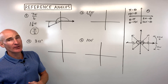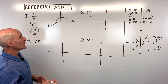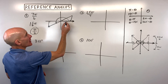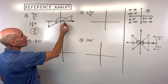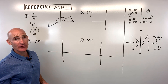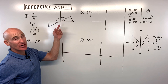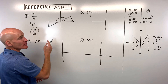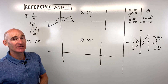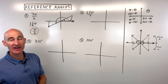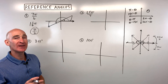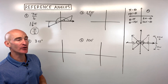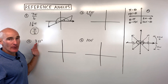You might be asking why they call it a reference angle. You can think of this as referring back to an angle in the first quadrant with a central angle of pi over 6. These two triangles are congruent, which means the side lengths are the same. So we can use it to help find the values of trig functions of common angles — we'll talk about that when we get into the unit circle.